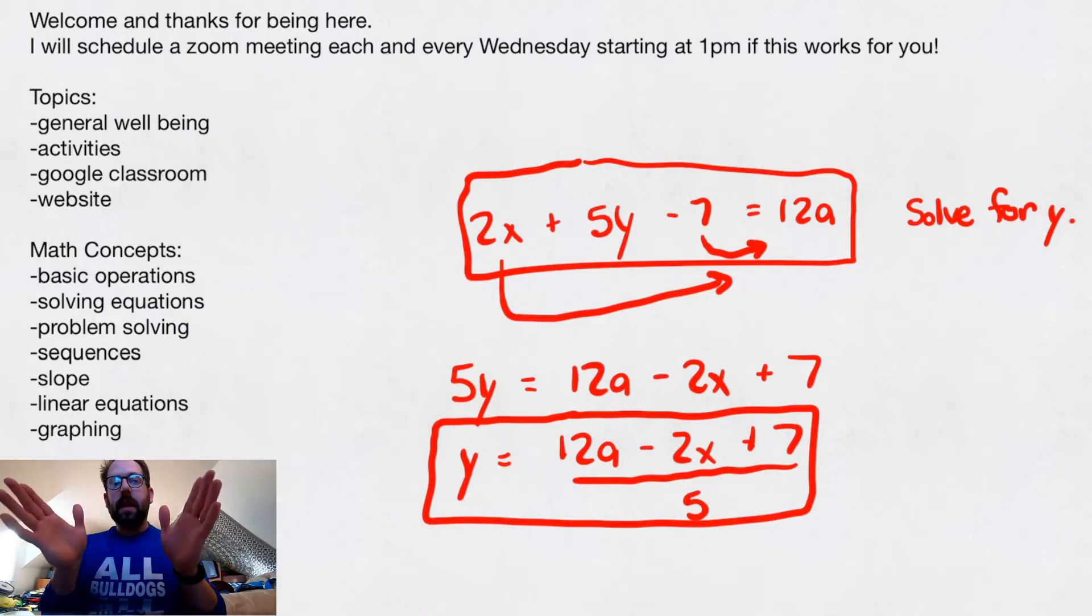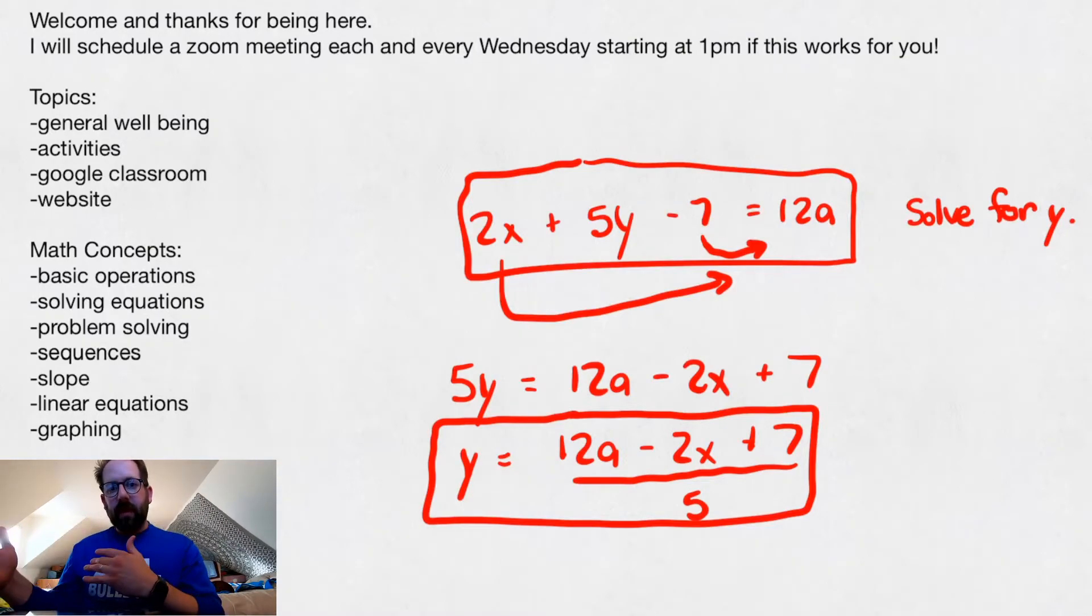Again, order of operations, inverse operation, you want to add and subtract first, anything across, then you want to multiply or divide, whatever it is, to the opposite side, and then if you have any exponents or parentheses, which we never have, but if you do have those, you do those last.